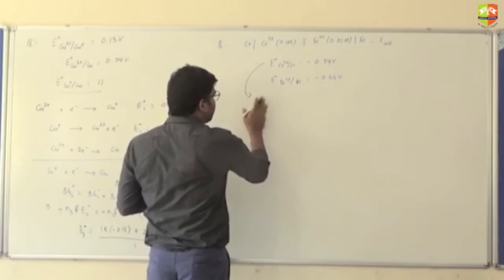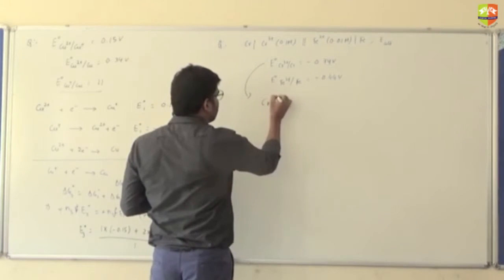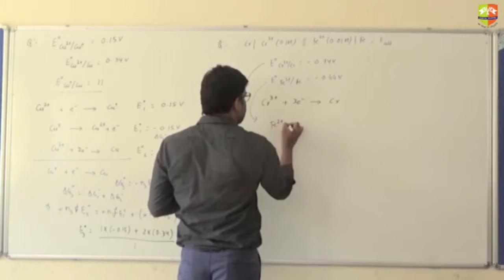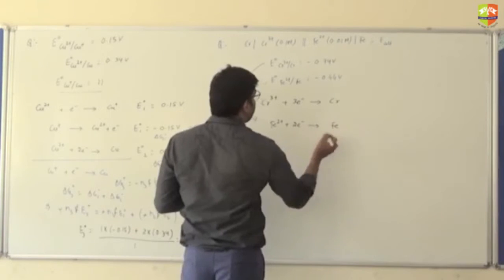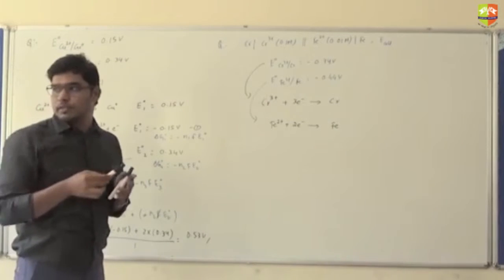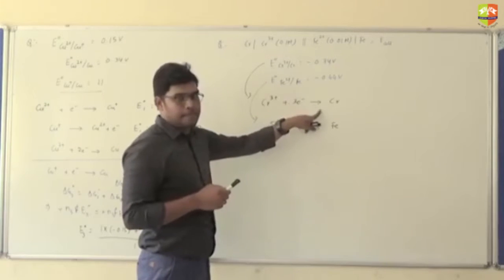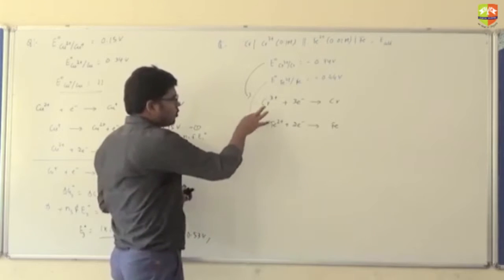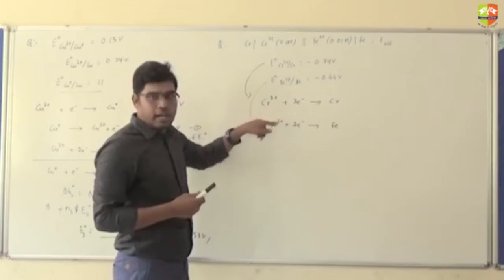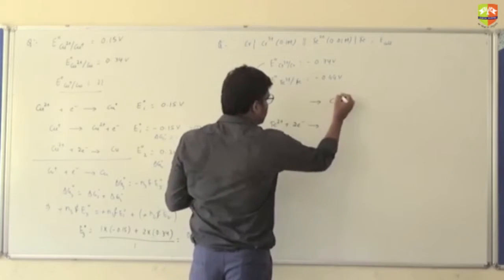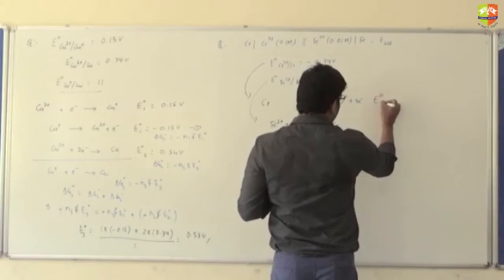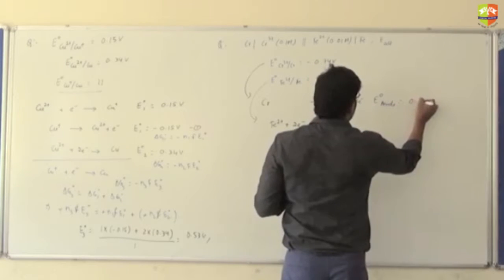The first reaction is Cr³⁺ + 3 electrons → Cr, and the second reaction is Fe²⁺ + 2 electrons → Fe. The right side is cathode, so it gets reduced — both are reduction potentials. Oxidation takes place at chromium (anode), so the oxidation reaction is Cr → Cr³⁺ + 3 electrons, and its E° value (oxidation) is +0.74 volt — the sign flips from −0.74.